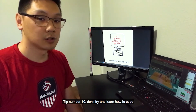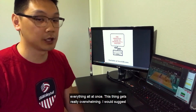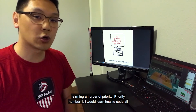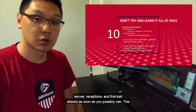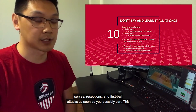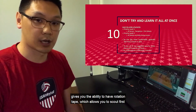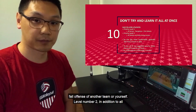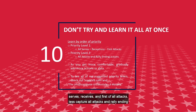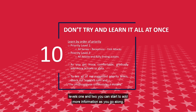Tip number 10: don't try and learn how to code everything all at once — this can get really overwhelming. I would suggest learning in order of priority. Priority number 1: learn how to code all serves, receptions, and first ball attacks as soon as you possibly can. This gives you the ability to have rotation tape, which allows you to scout first ball offense of another team or yourself. Level number 2: in addition to all serves, receives, and first ball attacks, let's capture all attacks and rally ending actions like block stuffs and dig errors. As you become more accurate coding levels 1 and 2, you can start to add more information as you go along.